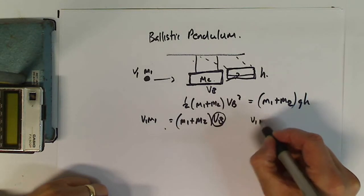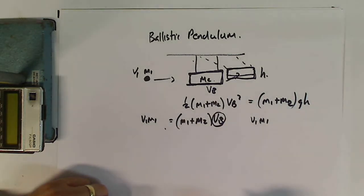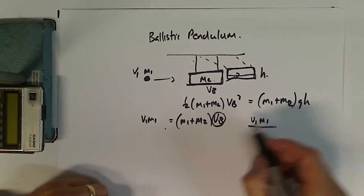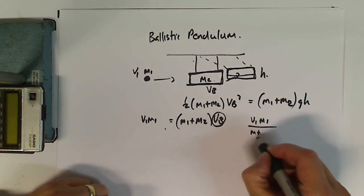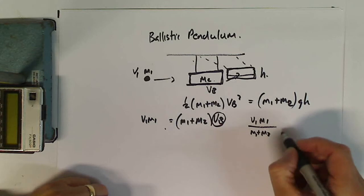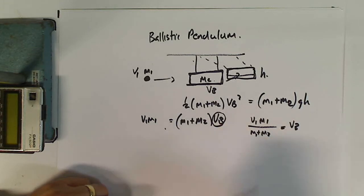I can just say, okay, that means that v1 m1 divided by (m1 plus m2) is equal to vb. So now I can rewrite my equation.